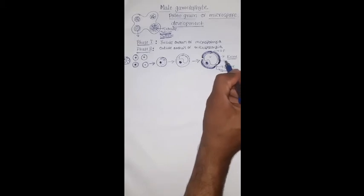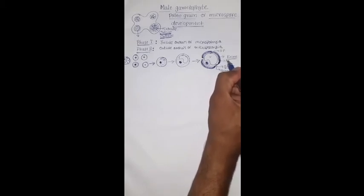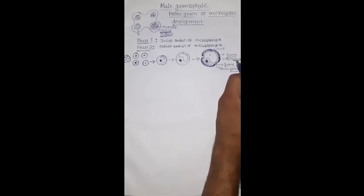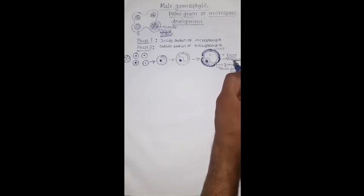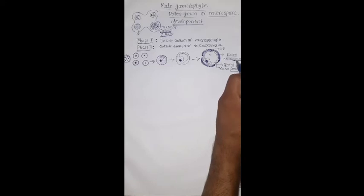The exine is made up of a very hard material called sporopollenin. It is very hard, so the pollen will survive extreme conditions; it is also the reason for the fossilization of pollen grains. Sometimes, along with sporopollenin, there is one more additional layer on pollen grains which is sticky or oily — that layer is called pollen kit, also secreted from the tapetum layer, usually found in insect-pollinated flowers.